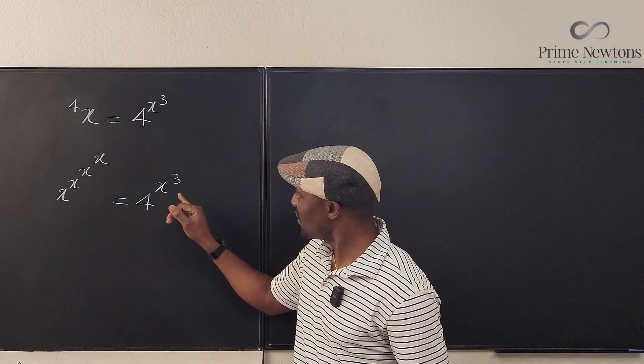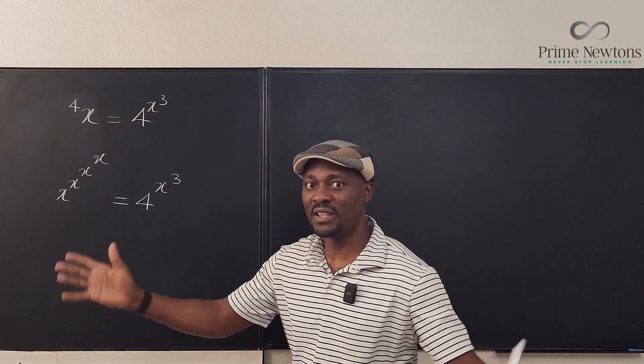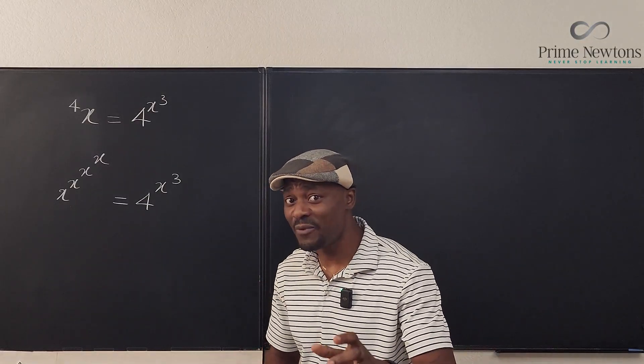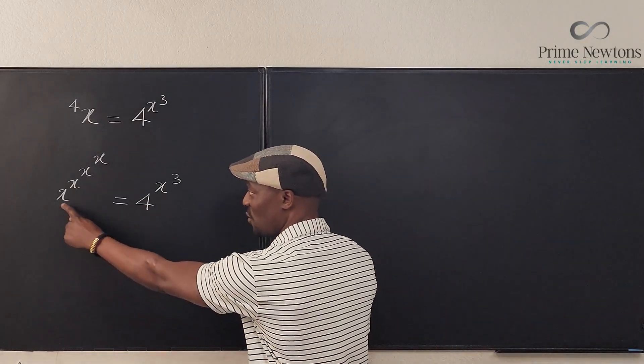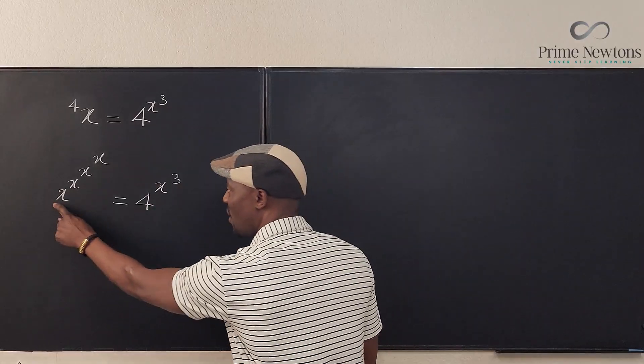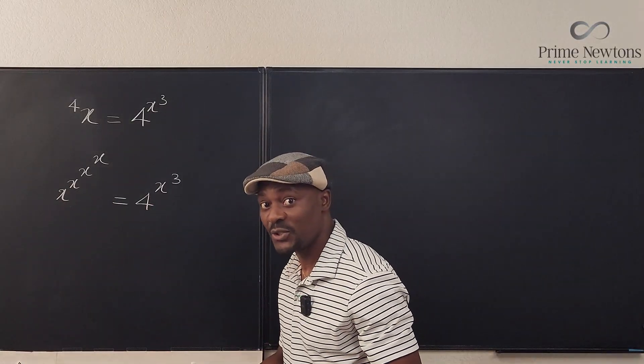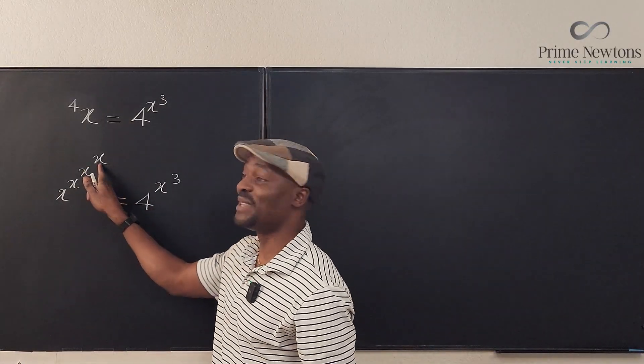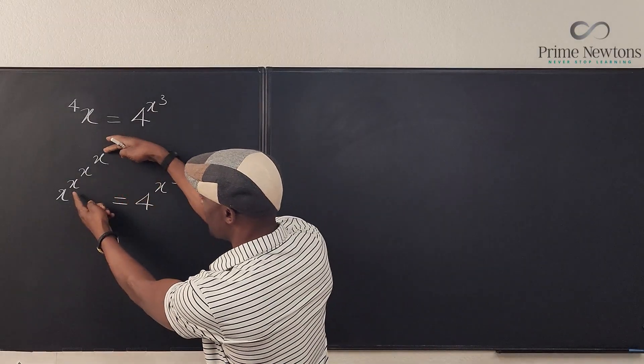So what I'm gonna do is take the natural log of both sides. Don't forget when you take natural log, this is what you're dealing with. It is what is sitting on the floor that you're focused on. So don't try to take the natural log and bring down this x, you have to bring down all three.